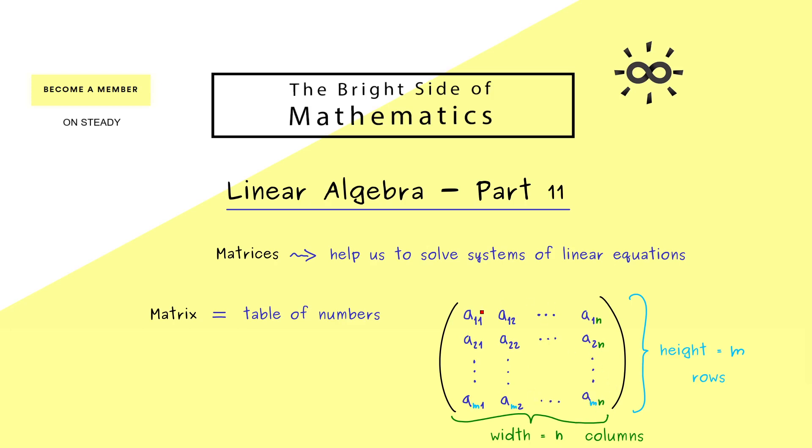However now we know that in the right bottom corner here we find the index a_mn. Okay with this now you already know what a general matrix is.